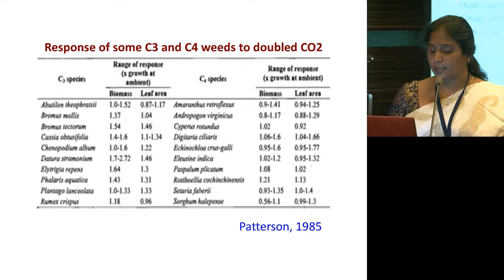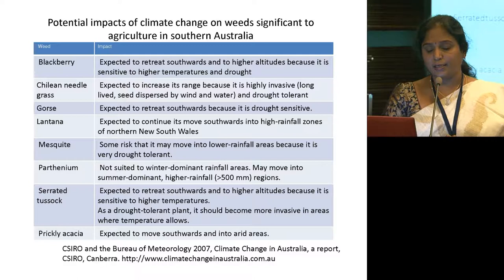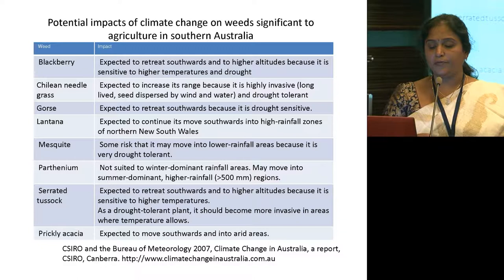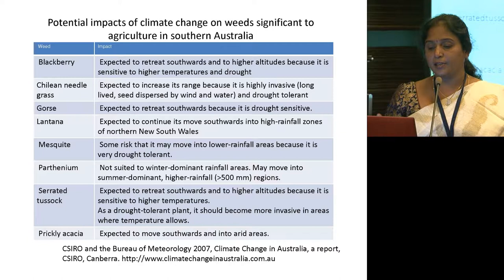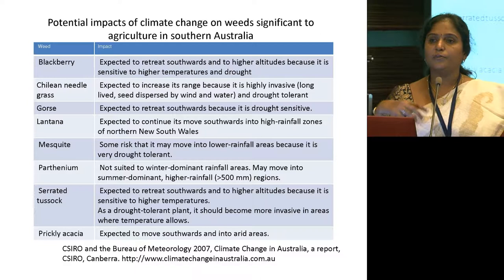CSIRO Australia conducted a thorough investigation into weeds and their possible impact under changing climatic conditions. One example is parthenium, which is not suited to winter-dominant rainfall areas but may move into summer-dominant higher-rainfall regions. By this kind of investigation we can determine which weeds will impact particular regions in a greater way because of the changing climate, so that we can tailor management practices accordingly.